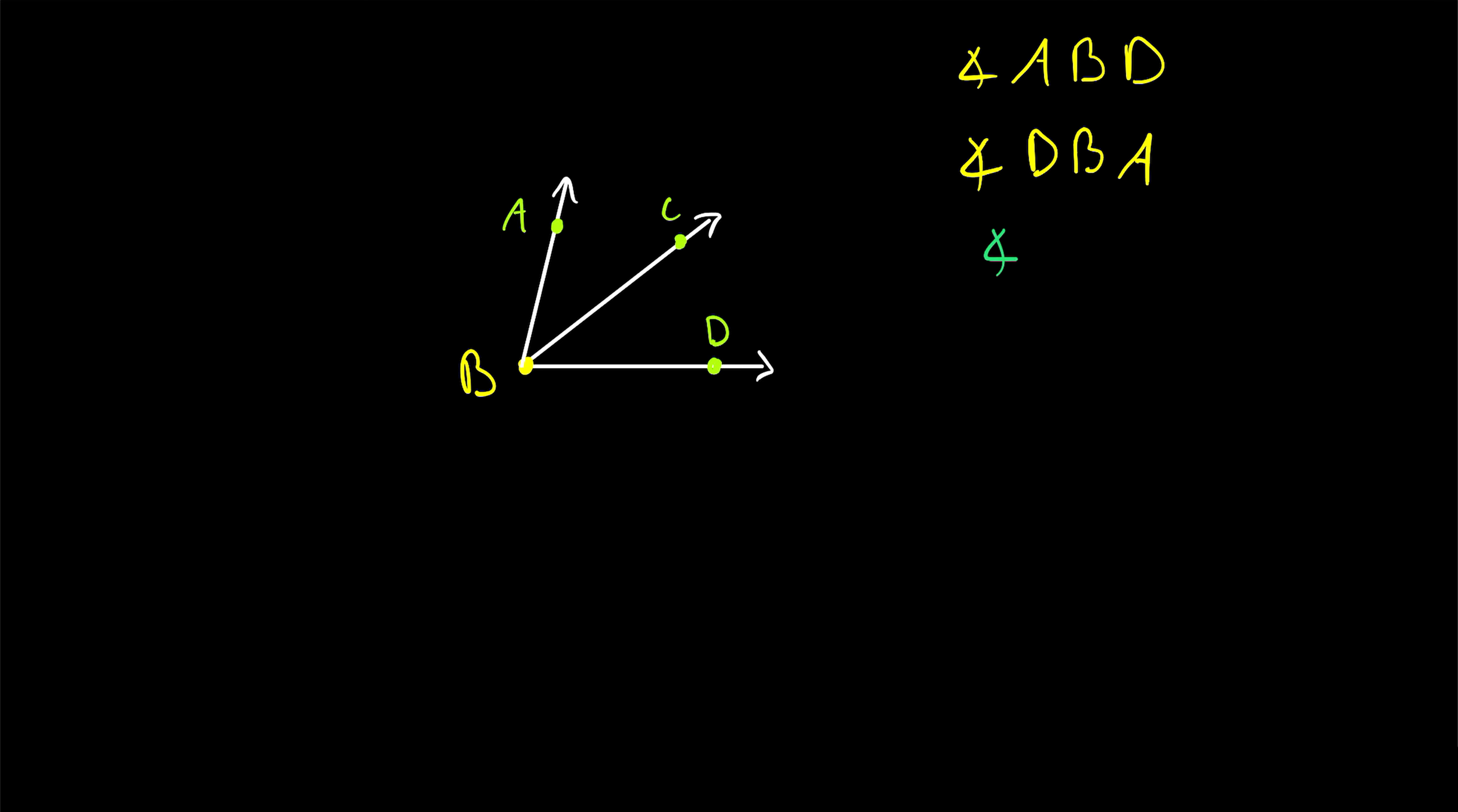If, for example, we wrote angle B, A, D, that would be referring to this angle, which we hadn't even drawn. In this angle, of course, B and D are the points on the rays or sides of the angle, and the middle letter, A, is the vertex of the angle.